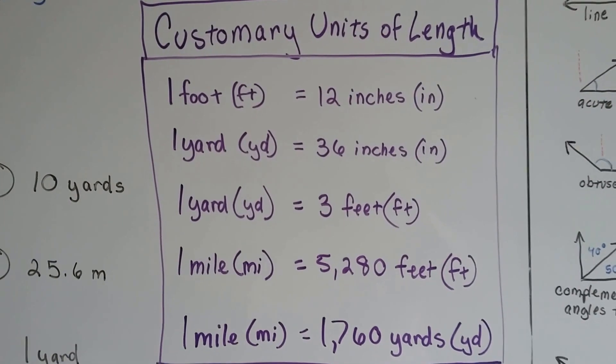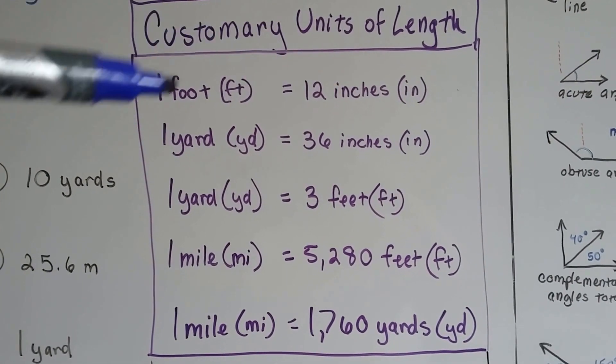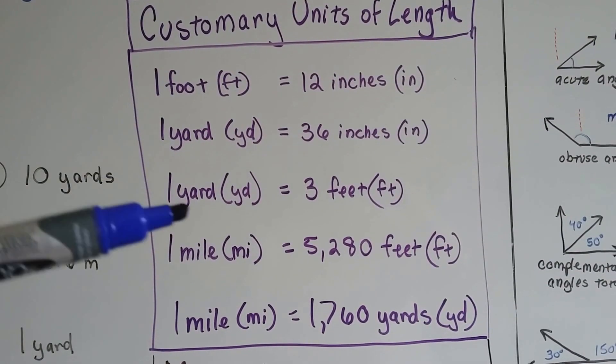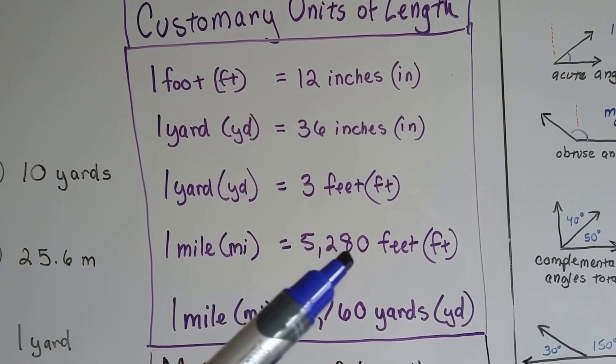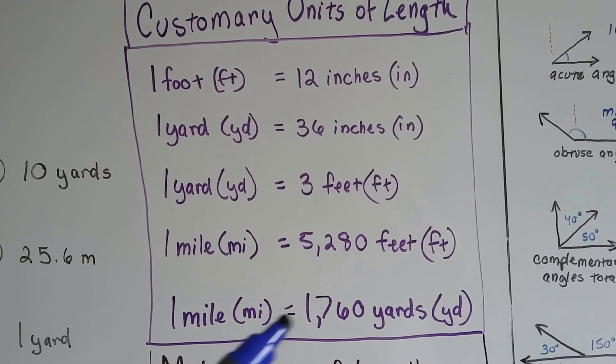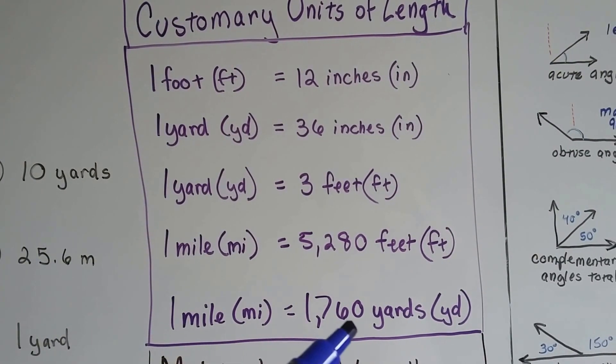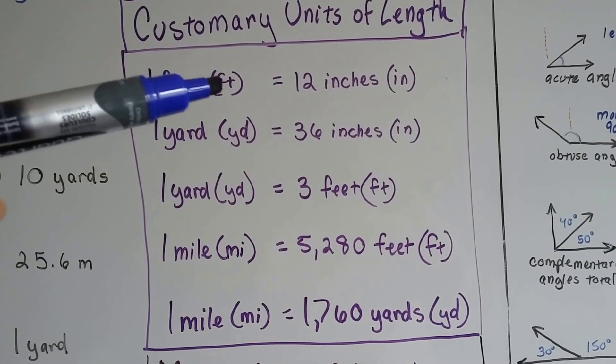Here's the customary units of length. One foot is 12 inches. One yard is 36 inches. It's also 3 feet. A mile is 5,280 feet. It's also 1,760 yards. And here are their abbreviations.